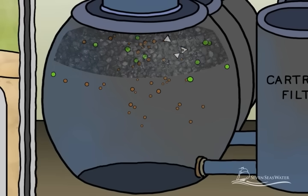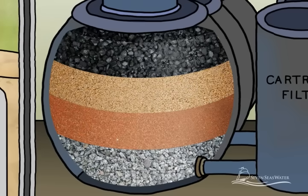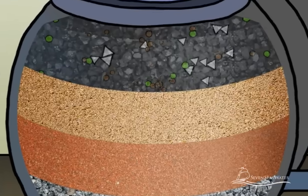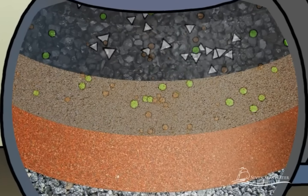These materials can be anthracite, garnet, sand, pebbles, and or gravel, which are assembled in layers. The filters remove sand, twigs, seaweed, and other particles from the seawater.